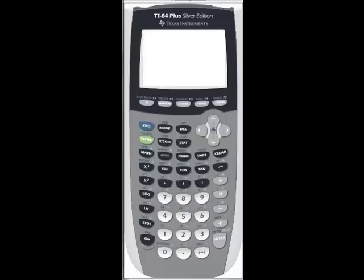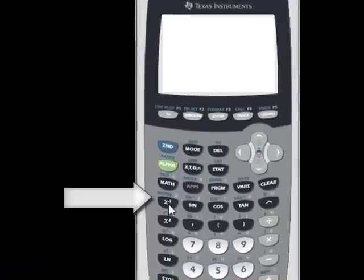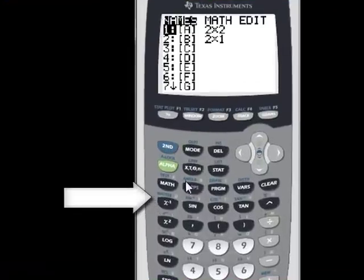So we're going to look at how to use reduced row echelon form in order to find our solution. First off, we go under our matrix command like last time.